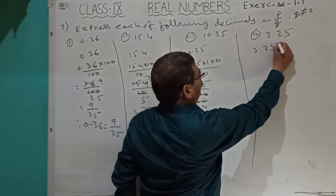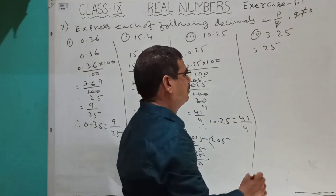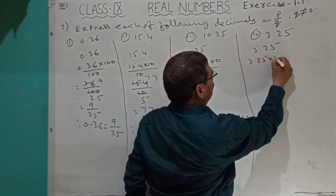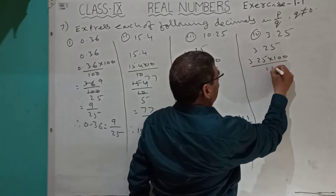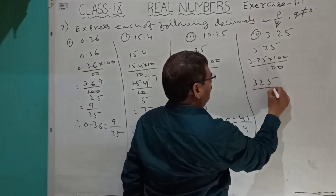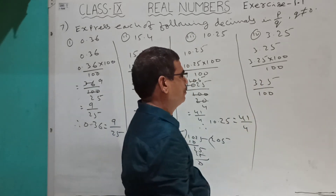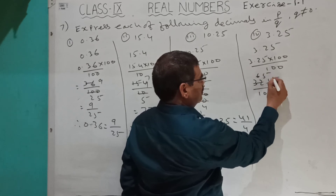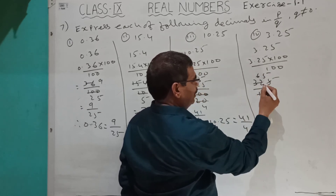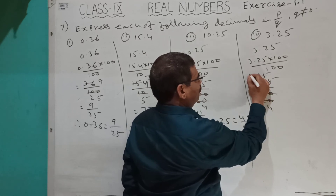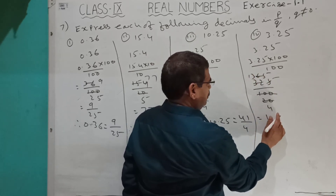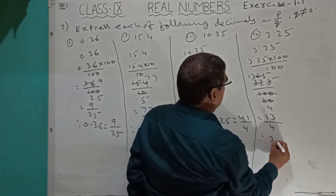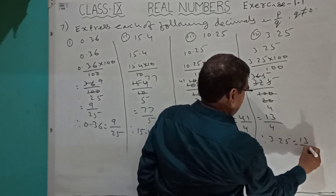For 3.25, there are two decimal places, so multiply and divide by 100: 325 by 100. Divide by 5: 5 sixes are 30 remainder 2, 5 fives are 25, giving 65 by 20. Divide again by 5: 13 by 4. Therefore 3.25 equals 13 by 4.